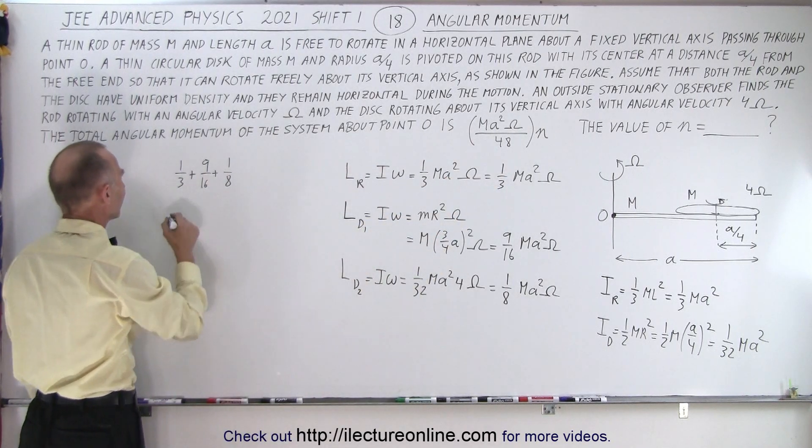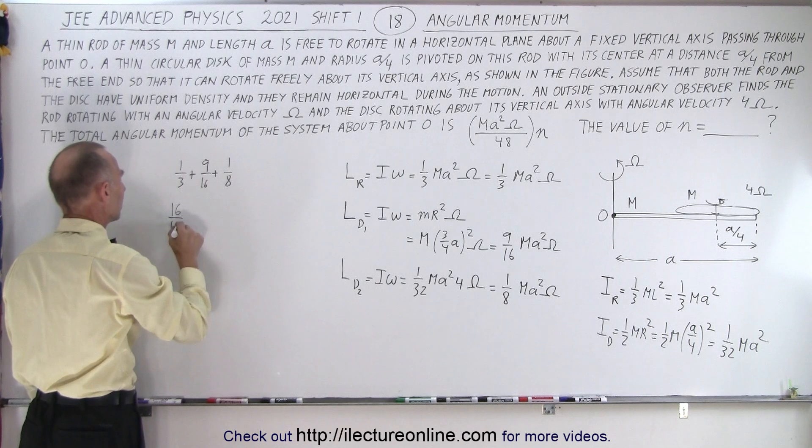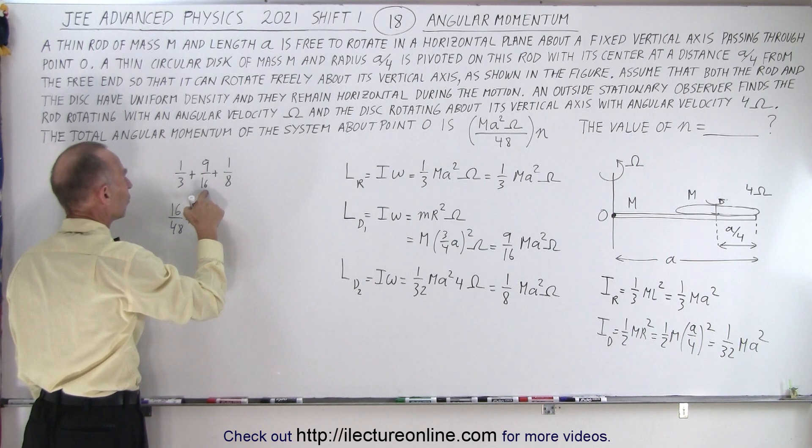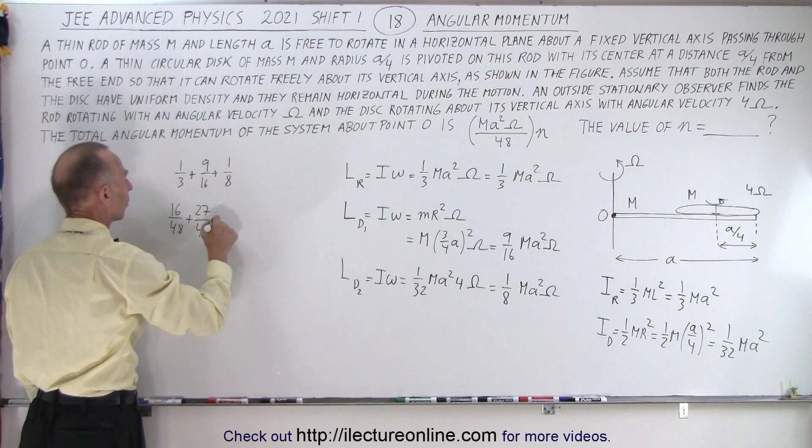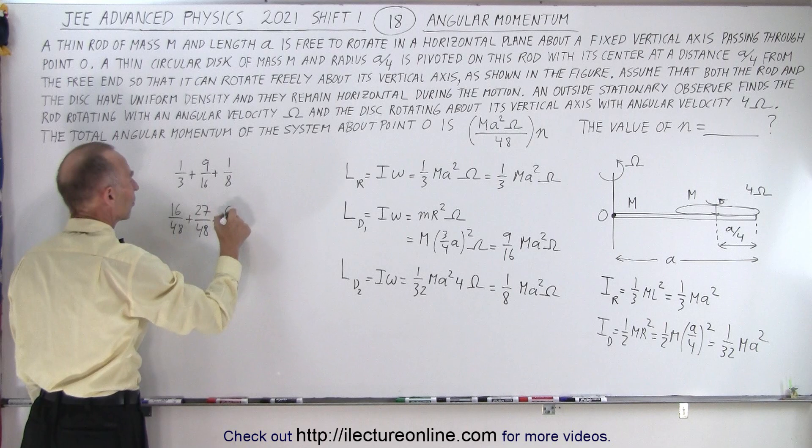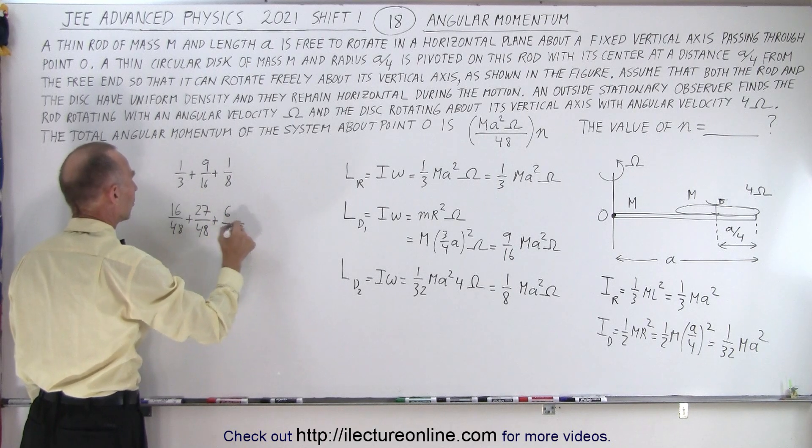So 3 goes into 48 16 times. So we have 16 over 48 plus that goes into 48 3 times so that gives us 27 over 48 plus that's an 8 plus this goes into 48 6 times so 6 over 48 which is equal to